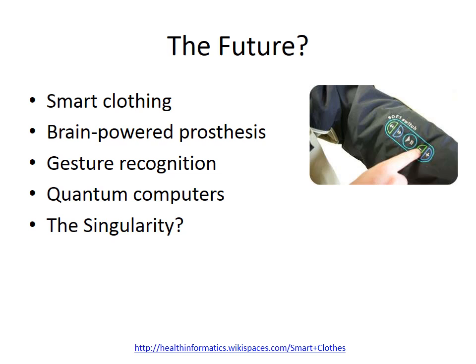So what does the future hold? Some researchers are focusing on smart clothing where the computer is part of your wardrobe, powered by the natural movements of the wearer. Researchers are also focusing on brain-powered legs, arms, and hands, especially as the wars in Afghanistan and Iraq have caused many servicemen and women to lose their limbs. This is connected to gesture recognition, where computers can recognize what the user wants based on interpreting human gestures. Microsoft's Kinect is a push in this direction, and perhaps the gesture interface will completely replace the touch interface someday.